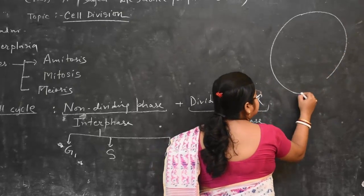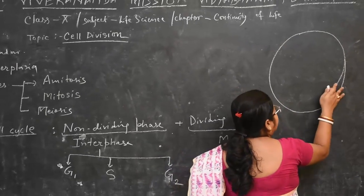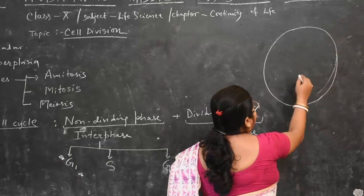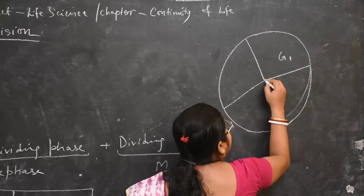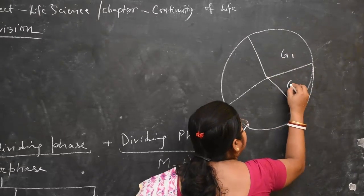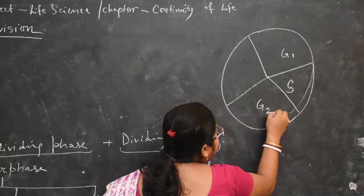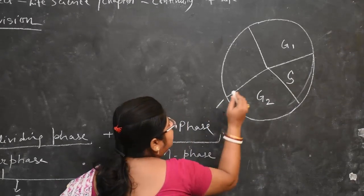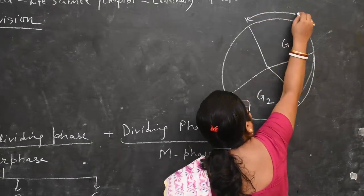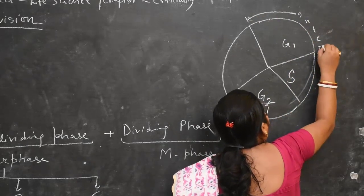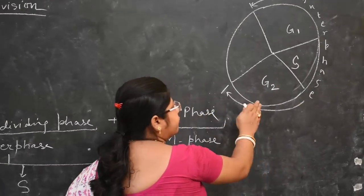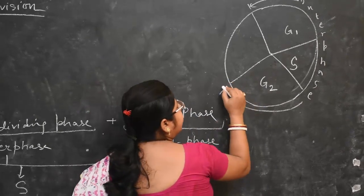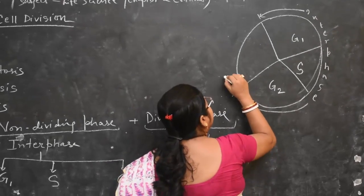If you represent the entire Cell Cycle as a pie chart, you will have G1, then S, and then G2 phase — this whole portion represents the Interphase. After the completion of G2, the next phase is the M-phase.